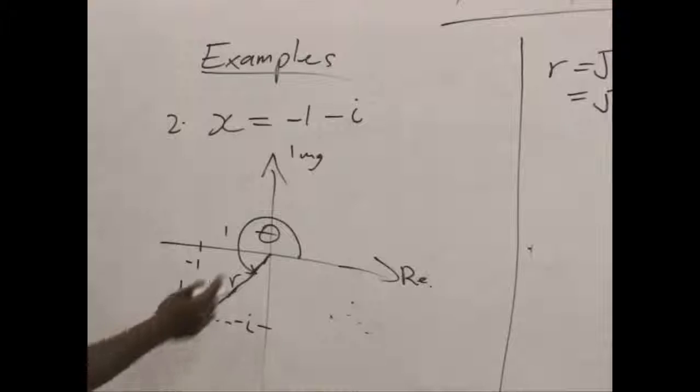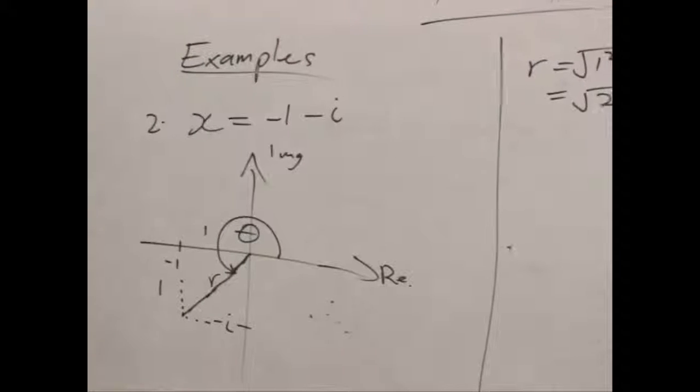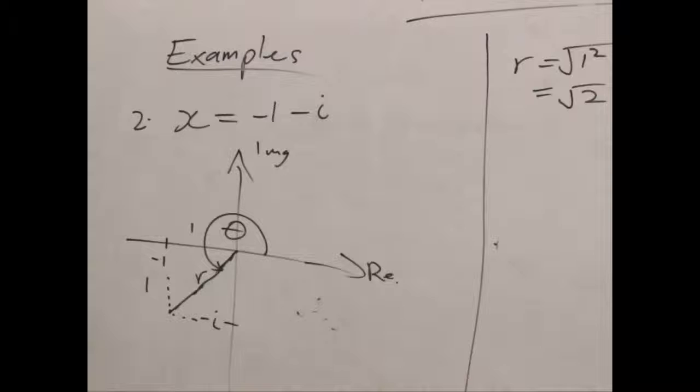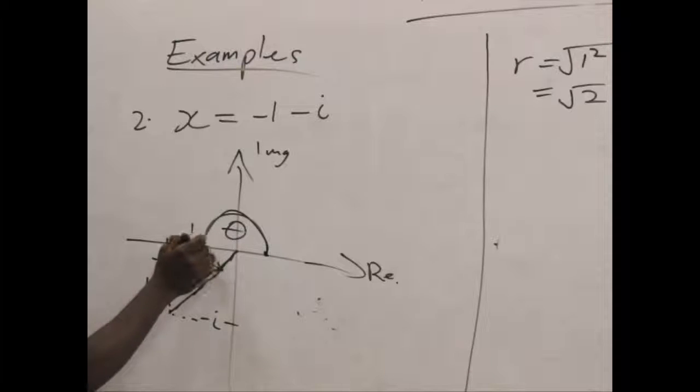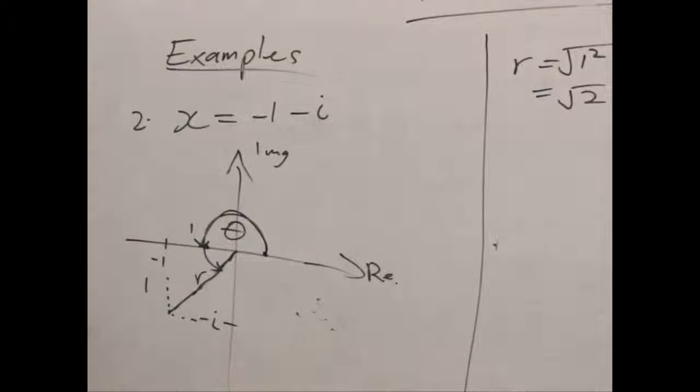Let's try finding theta. Now, let's take a look at the diagram very well. We can find out that from this part of the angle to this part only is half a revolution which is already equal to pi.